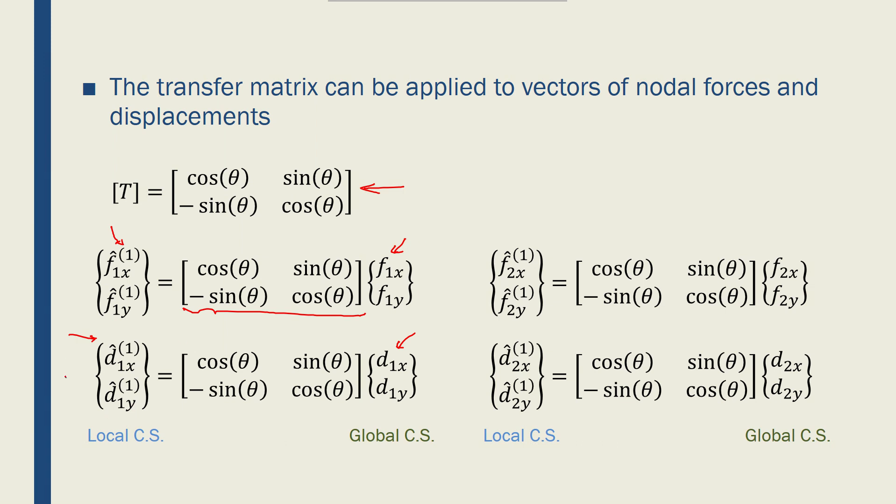Again, the local displacements are equal to the transformation matrix, the same matrix as above, times the global displacements or nodal displacements of node 1, and the same is true for node 2. Now I can use this to derive the global stiffness matrix for a truss element.